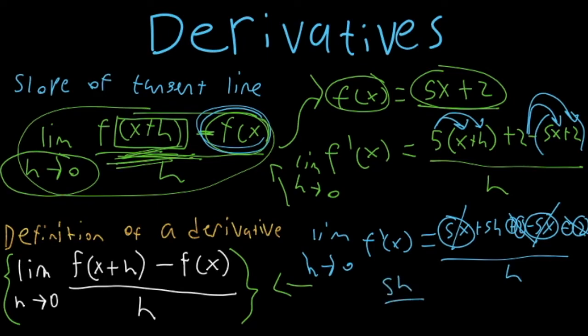So we're left with just 5h over h for the limit as h approaches 0. But now you'll notice that we can cancel off the h's. So we are just left with 5. And that actually is the answer. And this right here is the derivative.